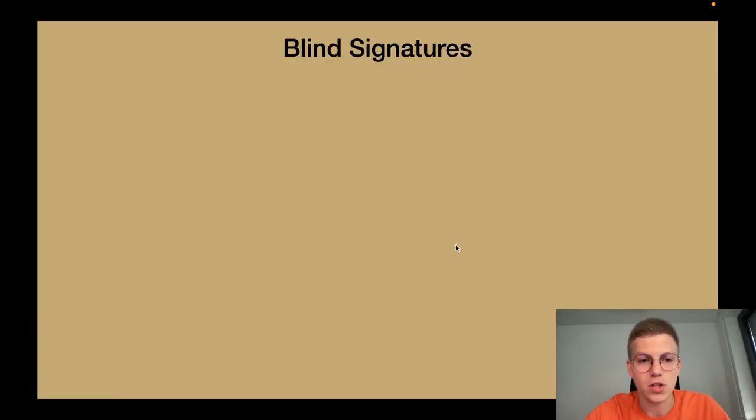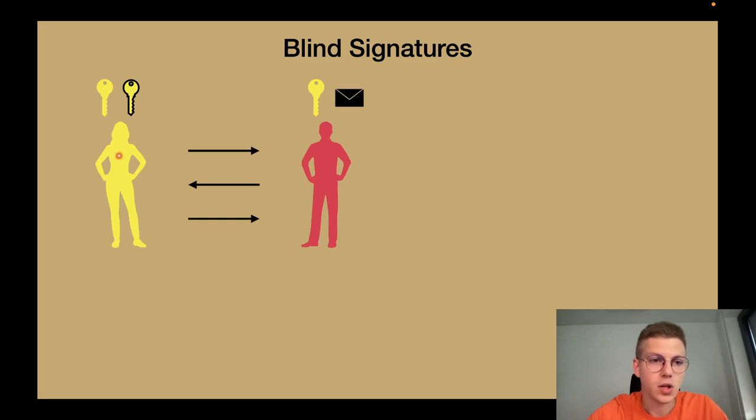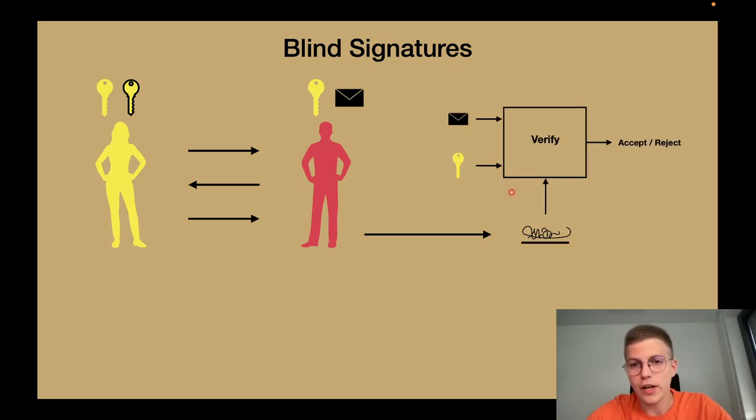Let me tell you what a blind signature scheme is. In a blind signature we have a signer and a user. The signer holds a public key secret key pair and the user holds only the public key but most importantly the message. This message should be signed and to do that they interact in some interactive protocol and the user gets a signature in the end. This signature can of course be verified as a standard signature using the public key and the message.